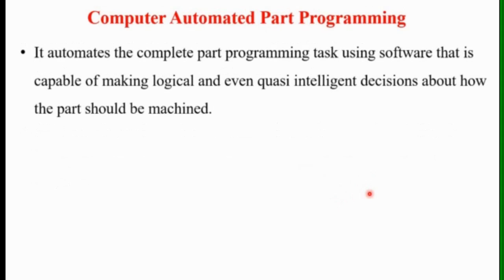The fifth method is computer automated part programming, which automates the complete part programming task using software capable of making logical and intelligent decisions about how the part should be machined.